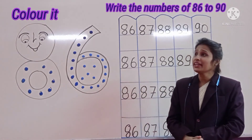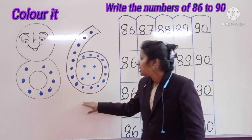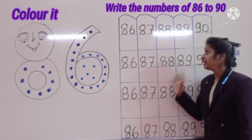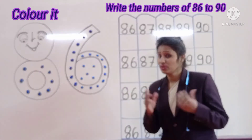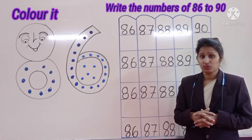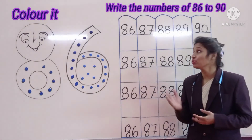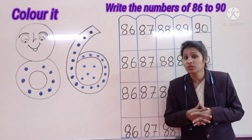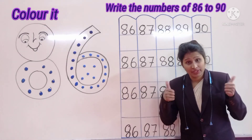Okay, my lovely kids. So today is your moment. Color the number 86 and then write the numbers of 86 to 90. And count from number 1 to 90. Okay, so listen to the group for your maths work. Thank you. Have a great day.